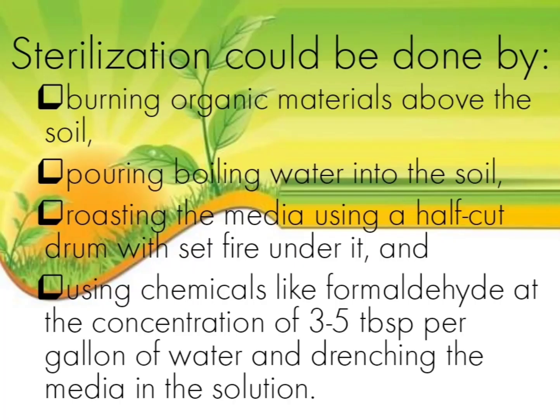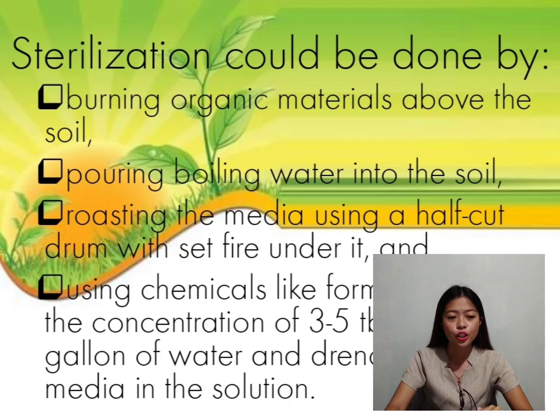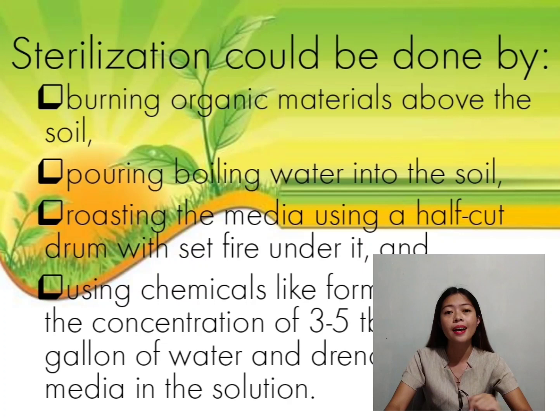After preparing the growing media, we must sterilize the soil. We have different ways of sterilization. First, burning organic materials above the soil. Second, pouring boiling water into the soil. Third, roasting the media using a half-cut drum with fire set under it.